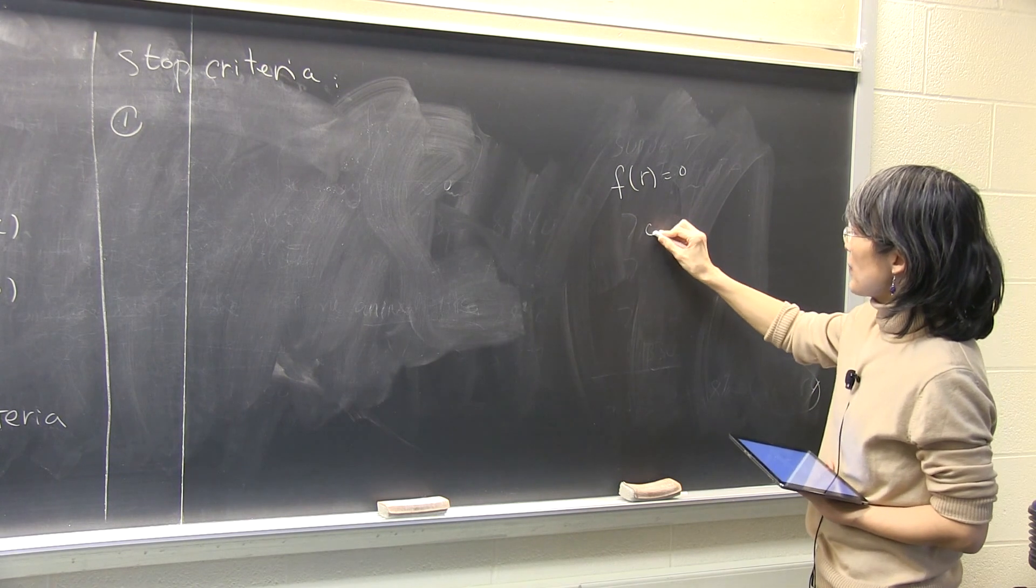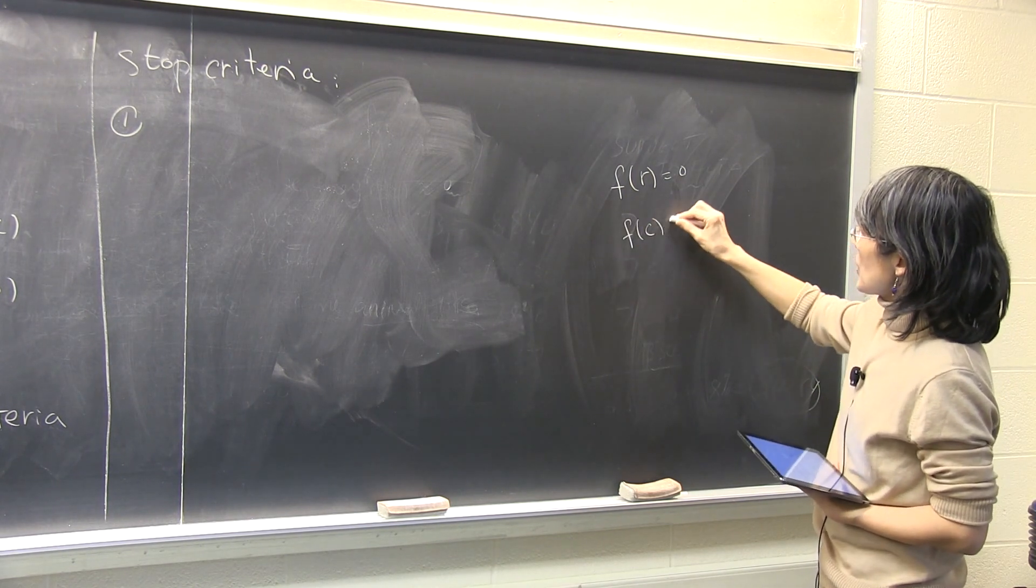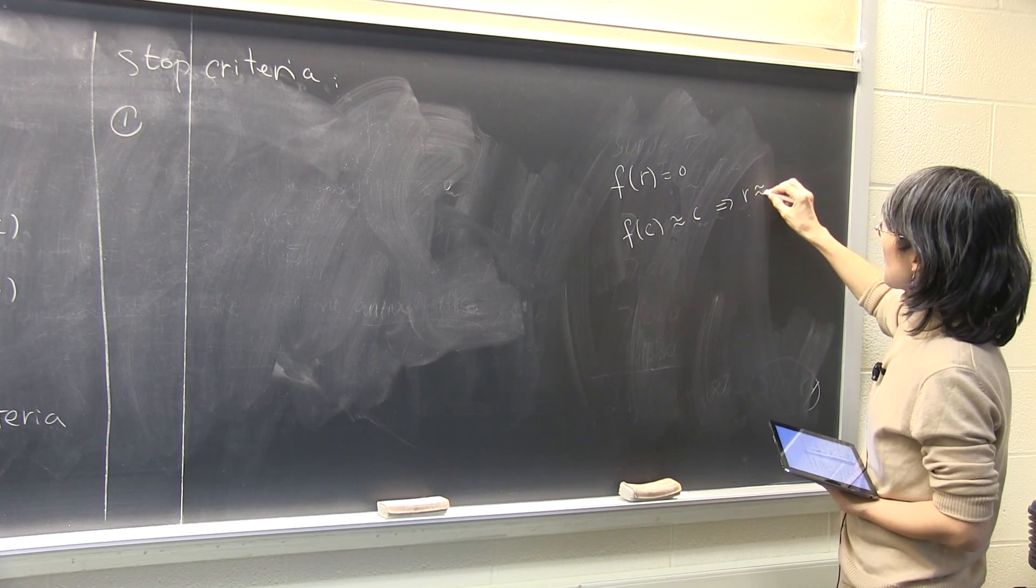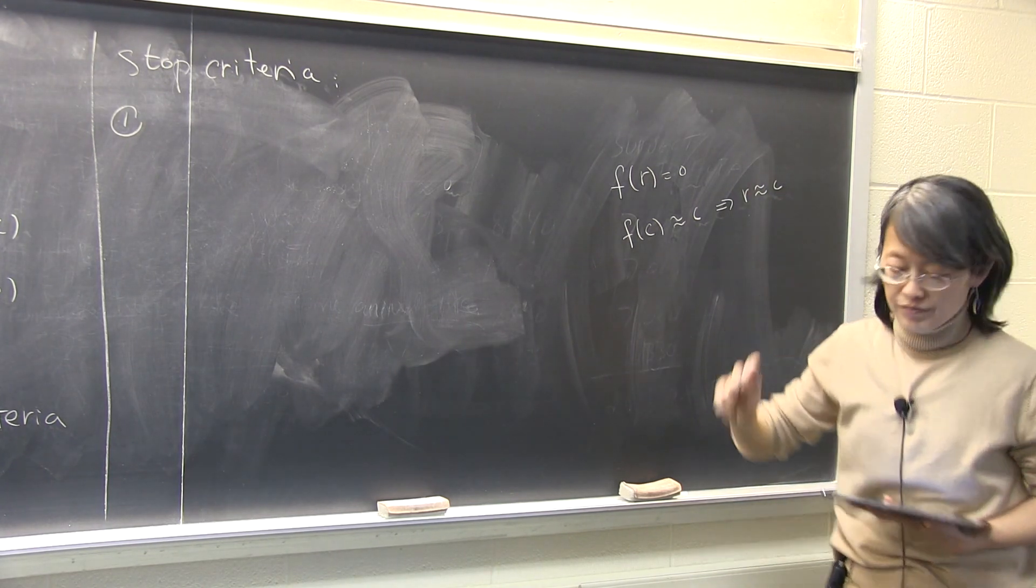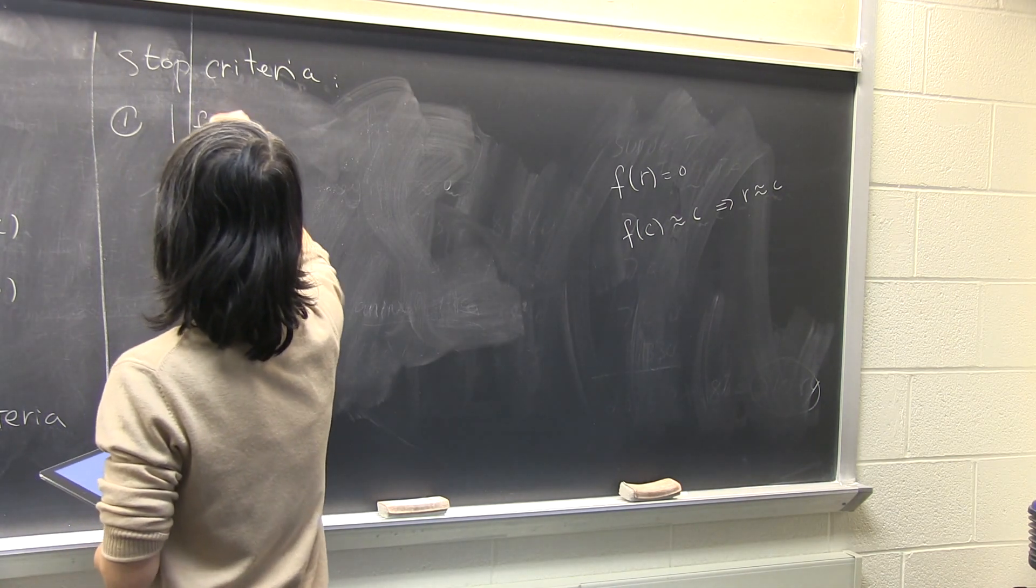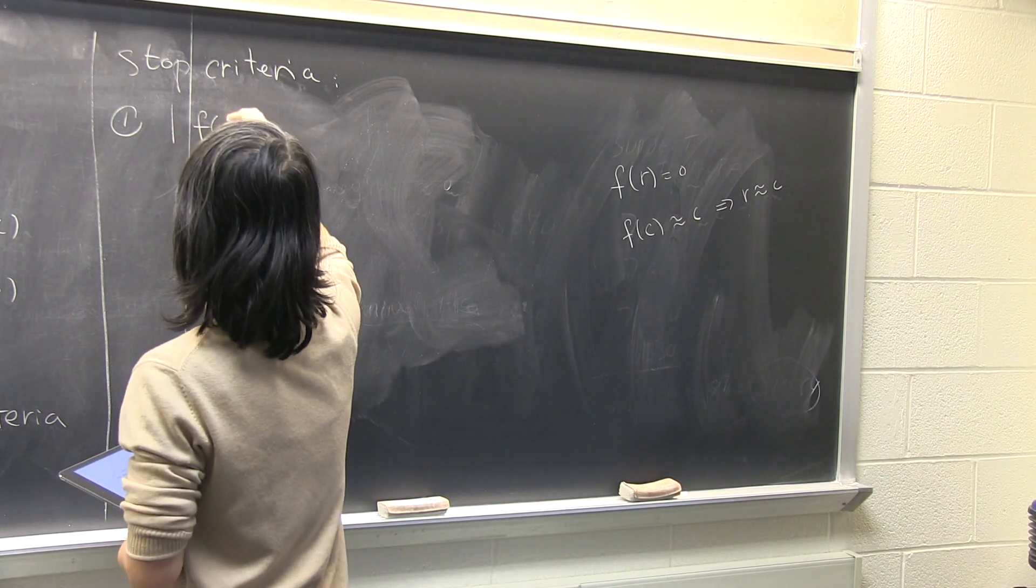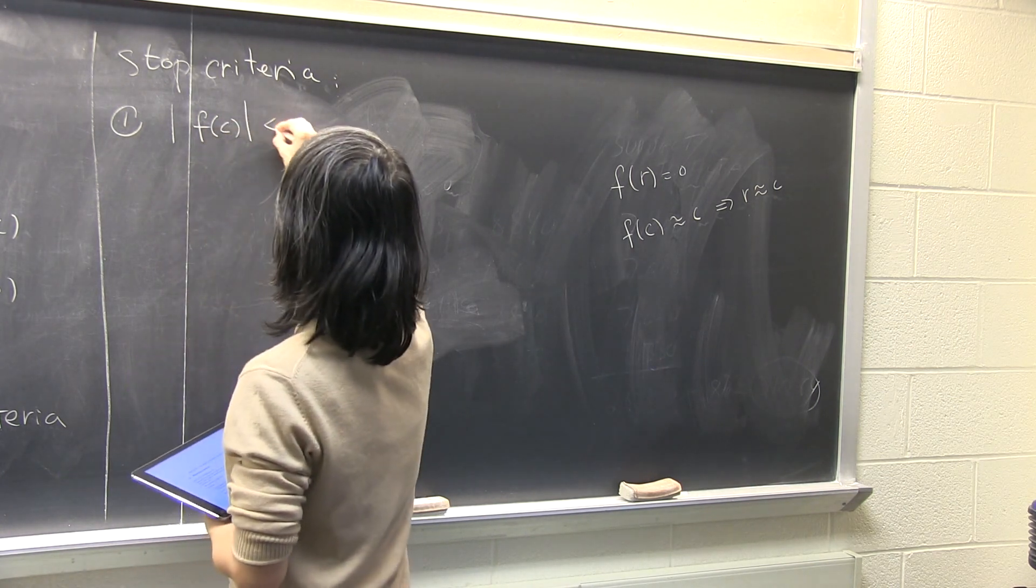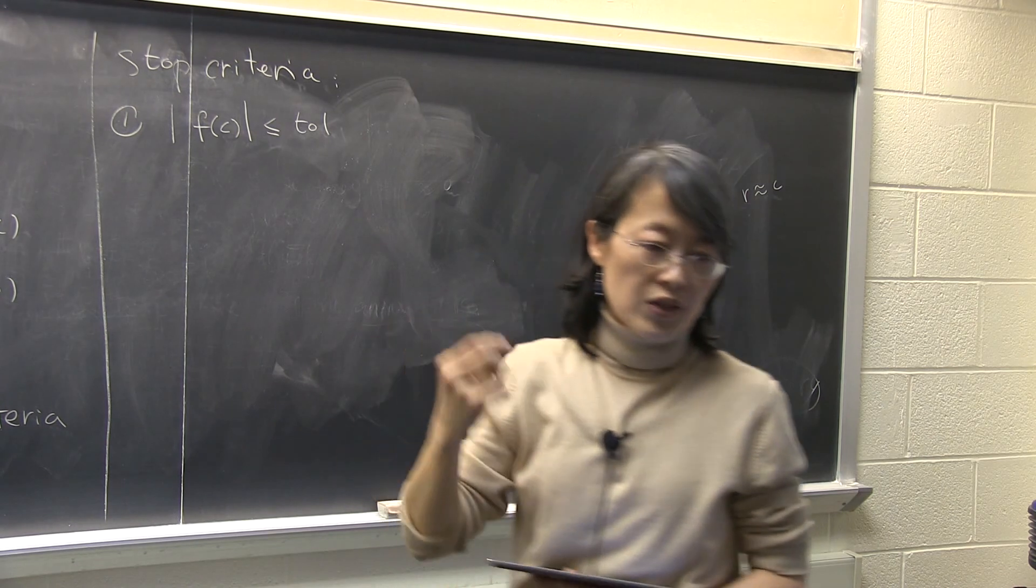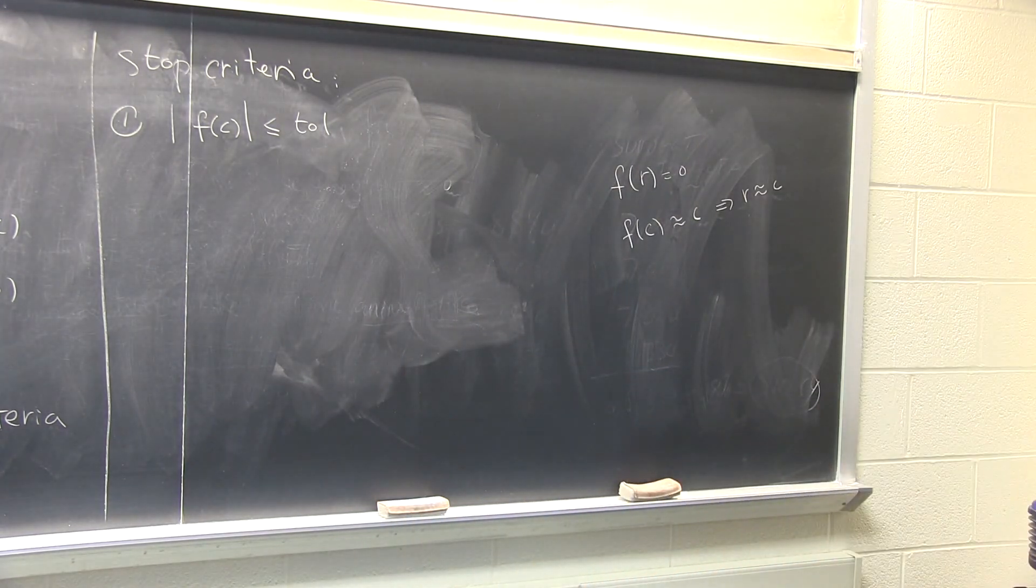So you are saying that my root r actually make f at r equals to zero. So if you find the c value, f of c should be very close to zero, and then you think r is close enough to c. So stop criterion will be just f of c in absolute value is less than your tolerance, right? Whatever you set up. 10 to the negative 6 is pretty standard to use. Anything else?